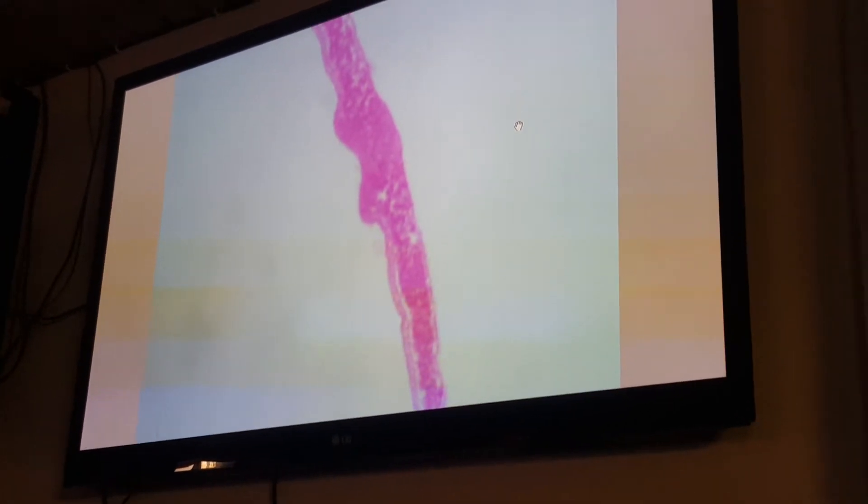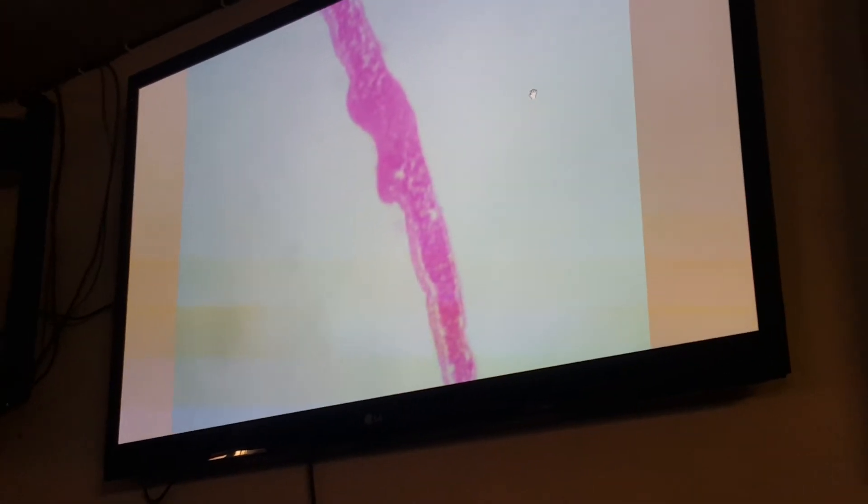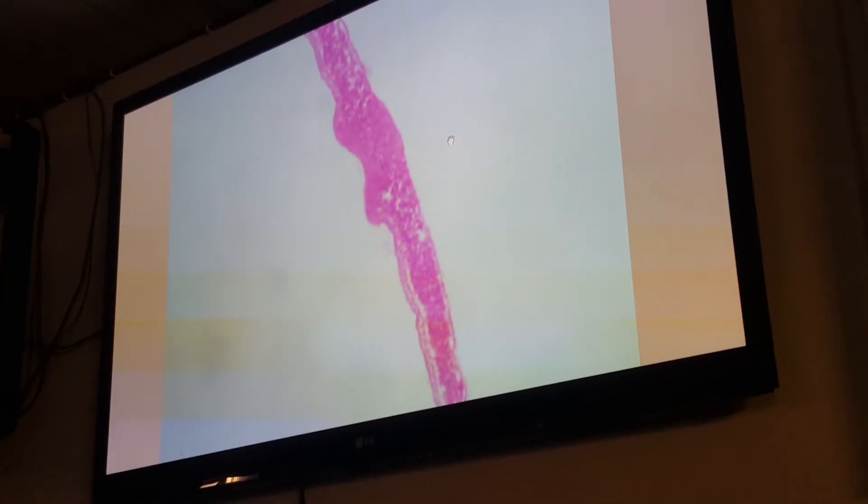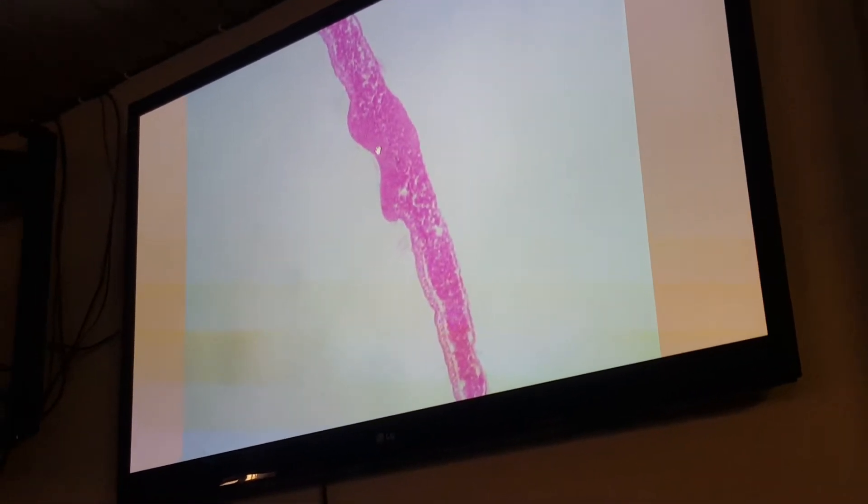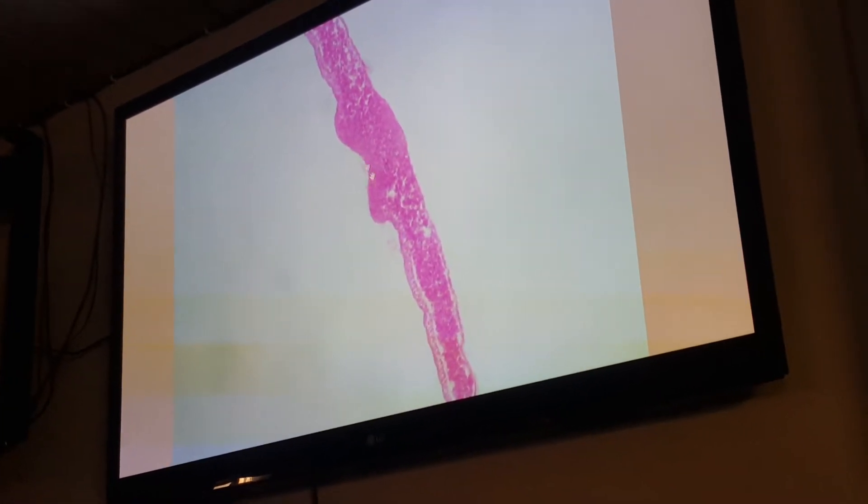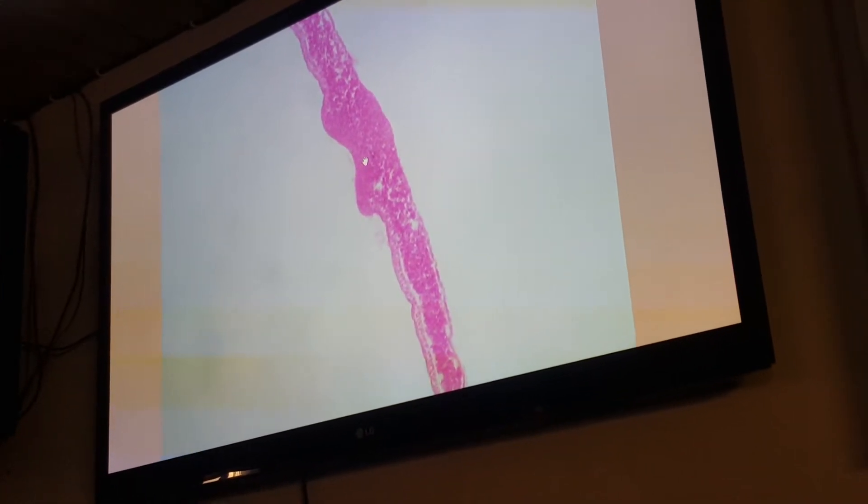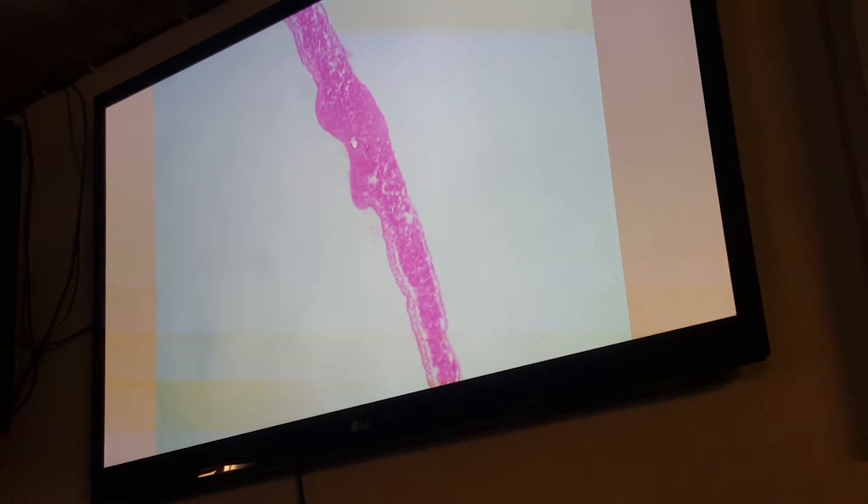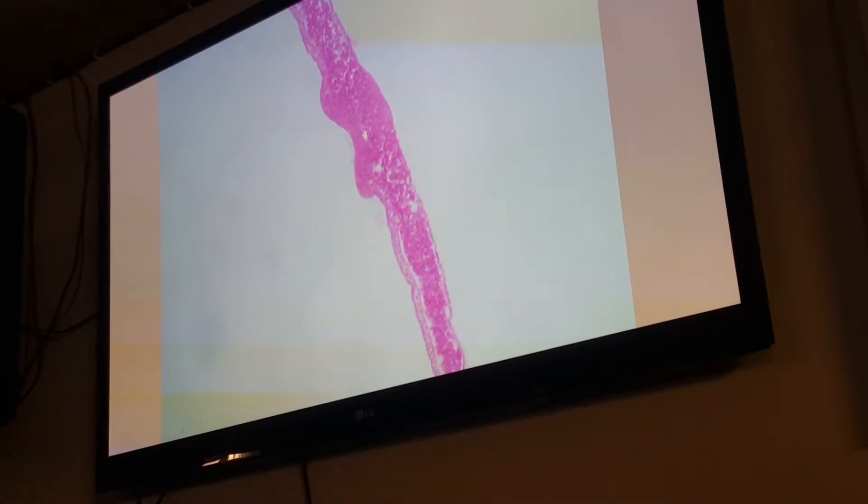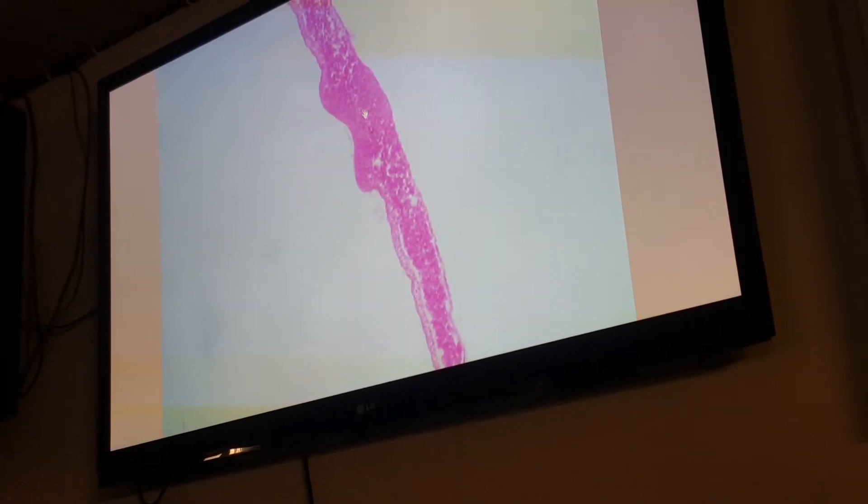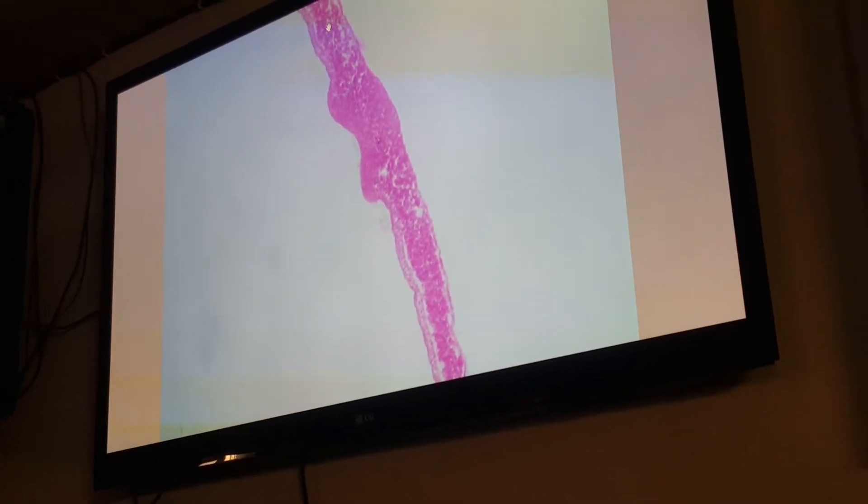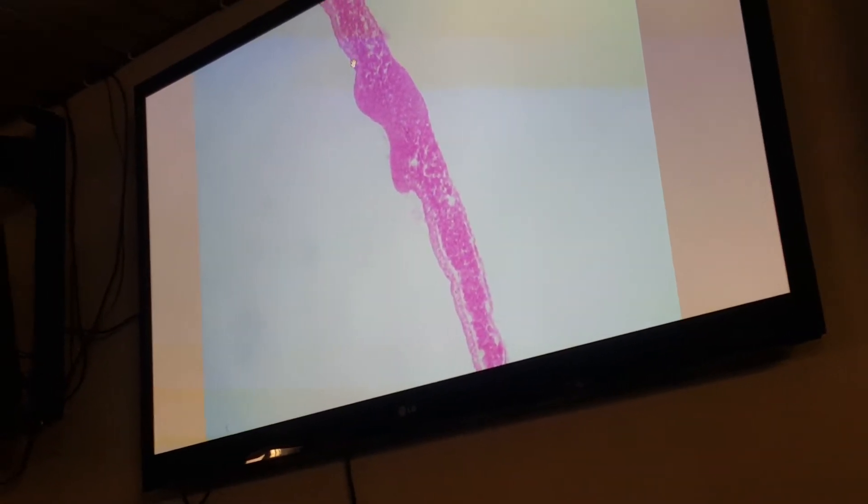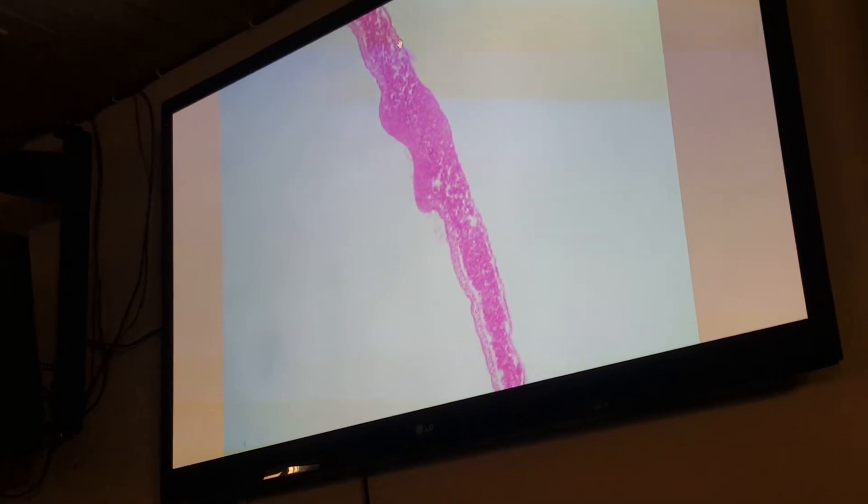And form a neural tube. As the endoderm, and form a neural tube. Sorry, plate. Neural plate. This is mesoderm, ectoderm, and endoderm.